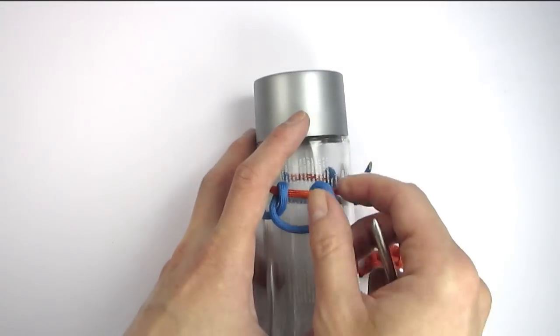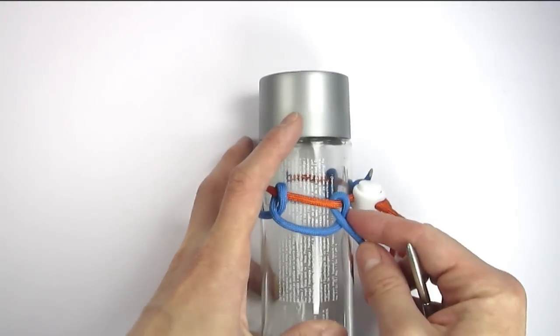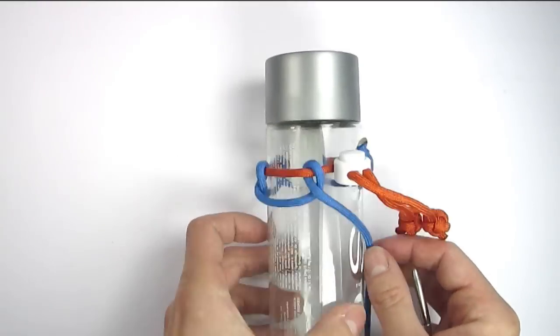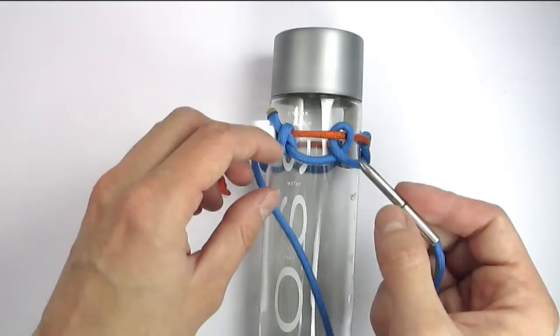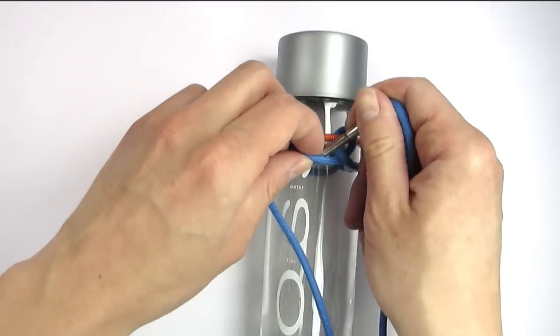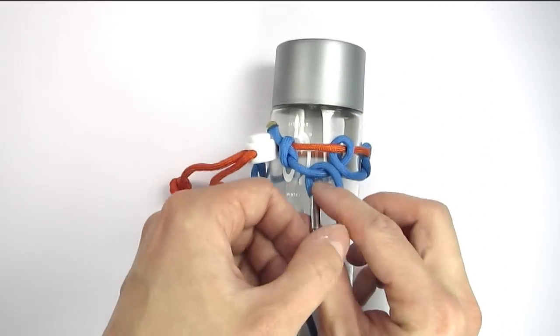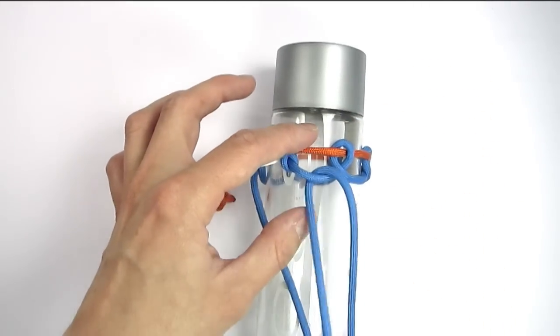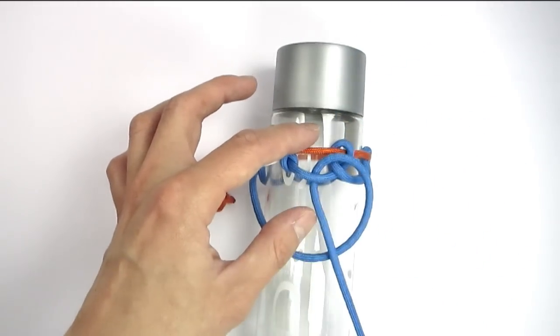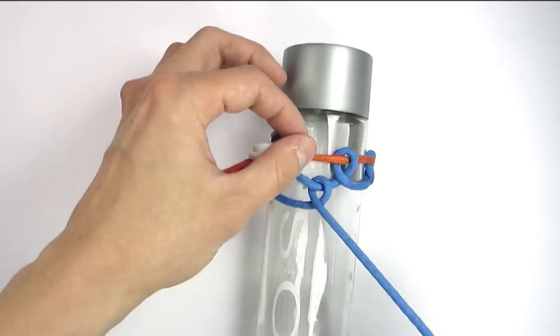I have now reached the second row. The transitioning is again very easy. We simply take our working cord and go through the top and through the front of the cord, just like we did on the first row. And we are going to simply continue this until we reach the bottom.